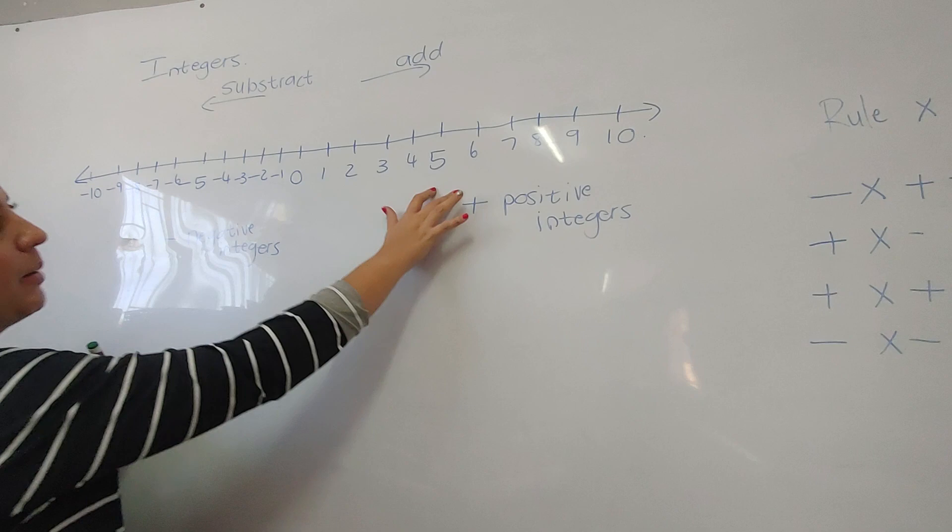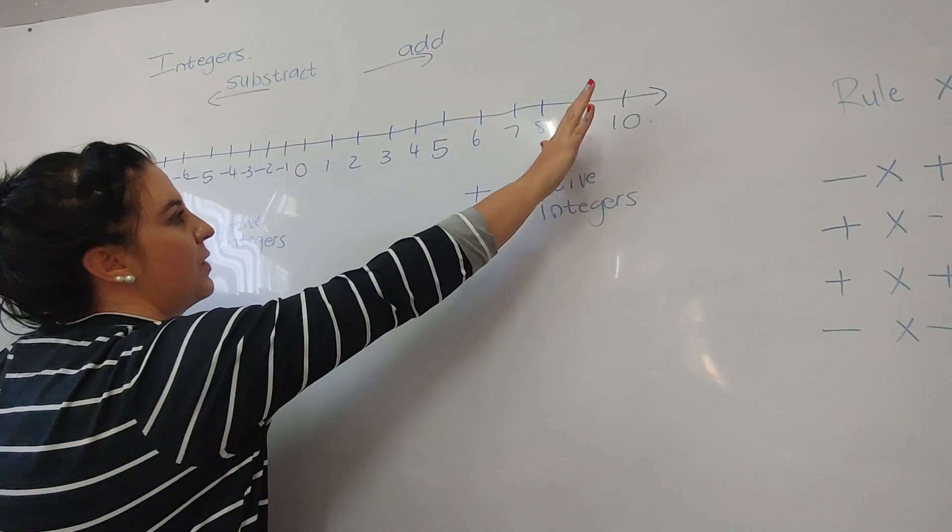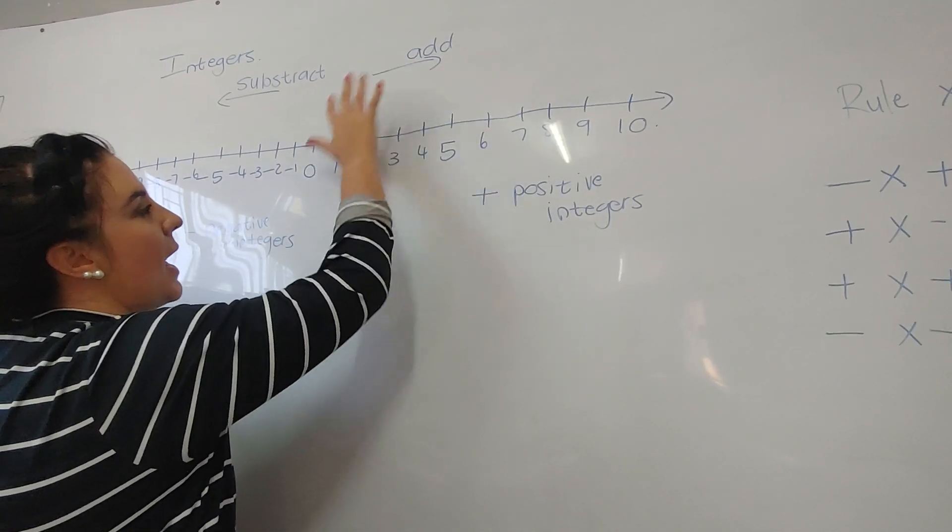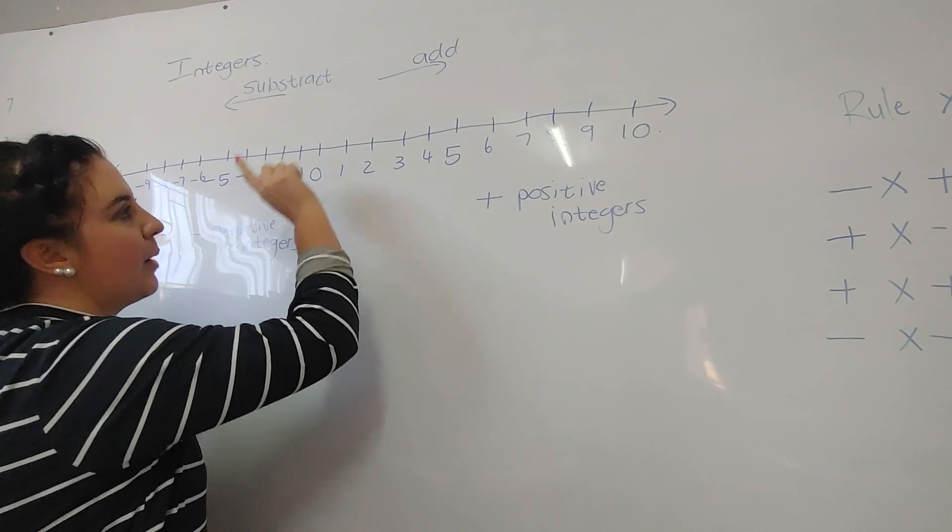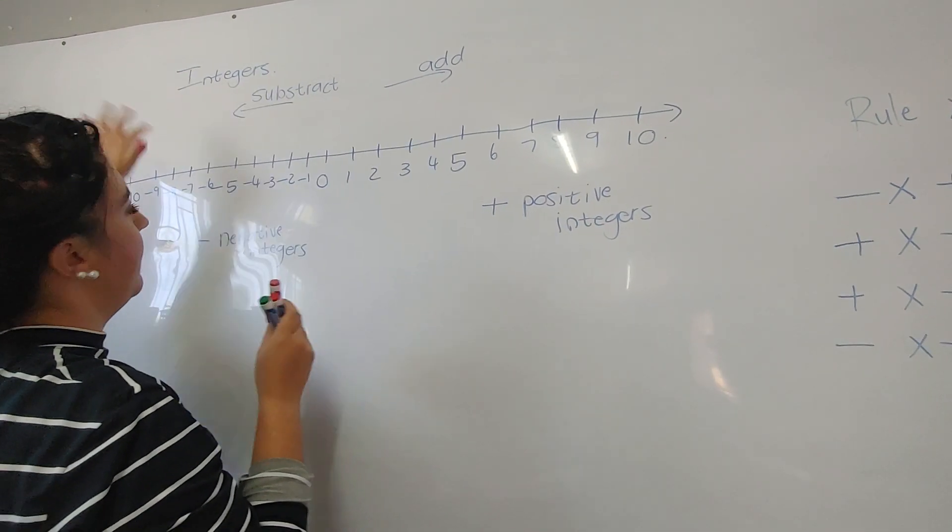Very important: when you look on the number line, I have a number here from minus 10 to 10. This side is the plus side. When we add, I'm going to move to the right-hand side. If we subtract, we're going to the left-hand side.